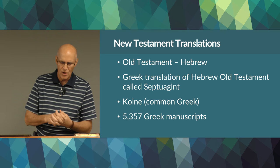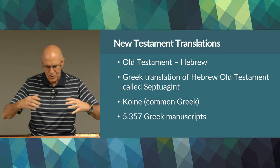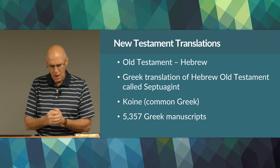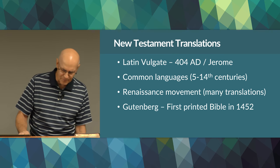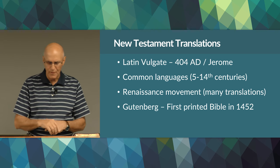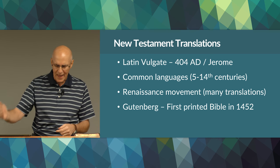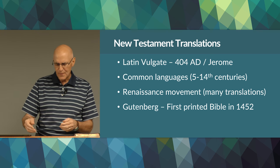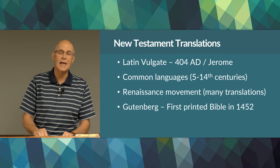Latin was the language of the western Roman Empire, and as Christianity spread westward, a new Bible version was developed. In 404 AD, Jerome produced a new Latin version called the Latin Vulgate, translating from the Greek. This became the standard version for study and church life in the Middle Ages.